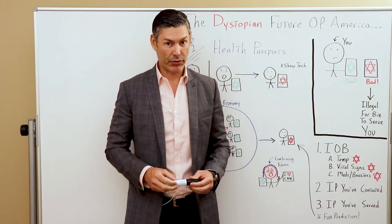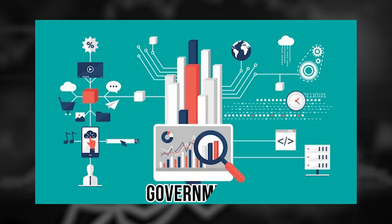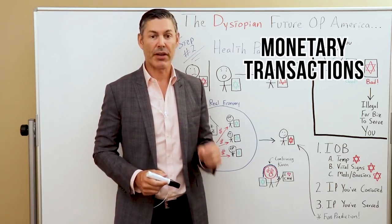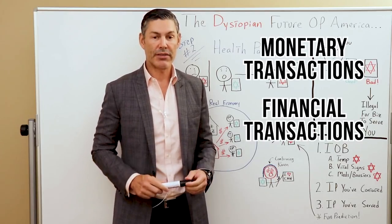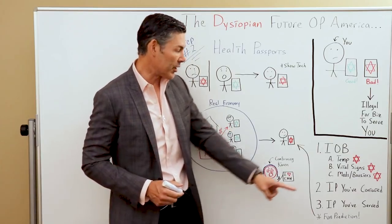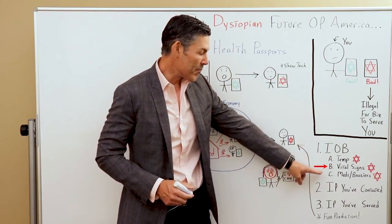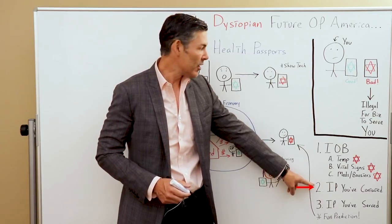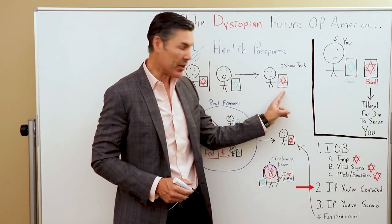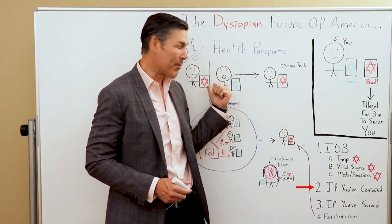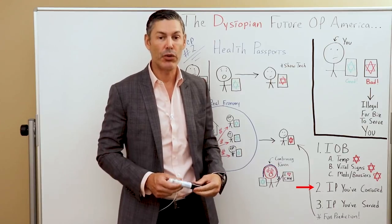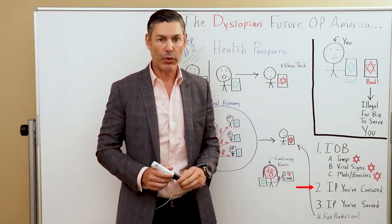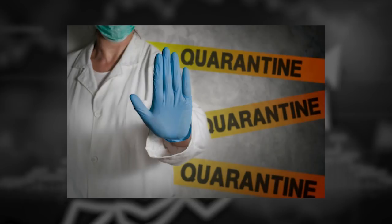The real-time data going to the government not only includes every single one of your financial transactions through a central bank digital currency, but it'll also most likely include your temperature, vital signs, meds, and boosters. It's going to include if you have been in contact with someone with a red star — and therefore, if you have, it's going to automatically give you a red star until you go through at least a two-week quarantine, according to the government or whatever safety precautions they have in place.